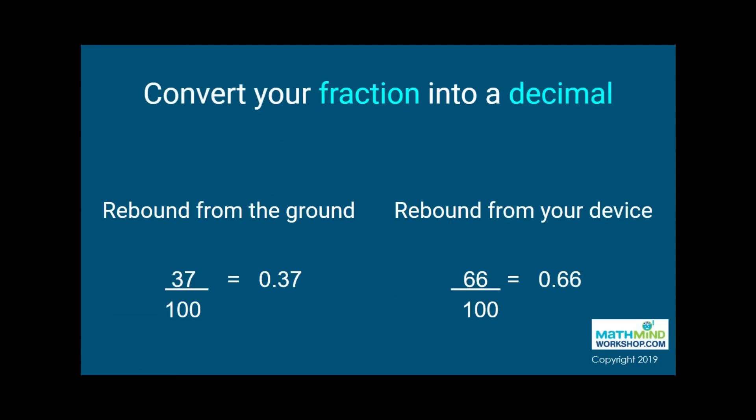Fractions can also be written as decimals, and it's especially easy when the denominator is already 100. Look at these examples. What do you think we did to convert a fraction with the denominator of 100 into a decimal? How are the numerators and the decimals the same, and how are they different? Use this rule to convert your fractions into decimals as well.